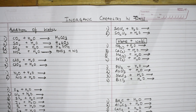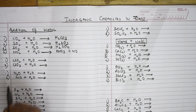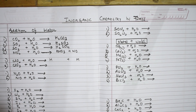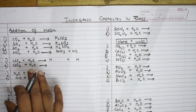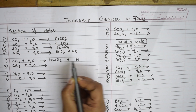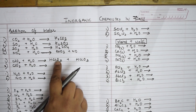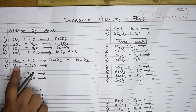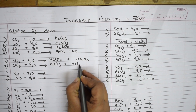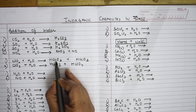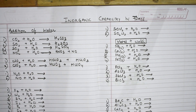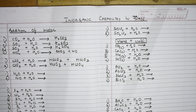For ClO2 plus water and ClO3 plus water: you have two hydrogens to distribute. When you balance the reaction, ClO2 gives two products — HClO2 plus HClO3. For ClO3, the next higher oxide, you get HClO3 and HClO4. So remember: for ClO2 you get the acids with subscripts 2 and 3; for ClO3 you get subscripts 3 and 4.